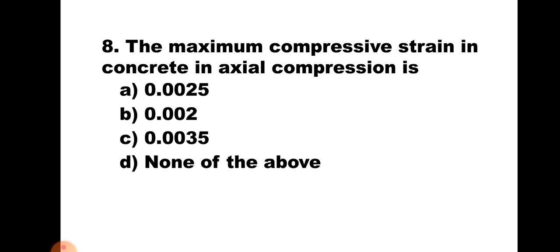Question number 8. The maximum compressive strain in concrete in axial compression is: A) 0.0025, B) 0.002, C) 0.0035, or D) none of the above. According to IS 456, whenever we are considering axial compression, the maximum compressive strain is to be taken as 0.002. Hence the correct answer is B, 0.002.